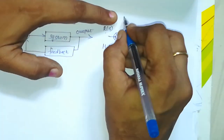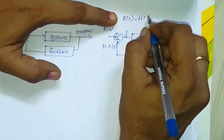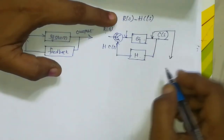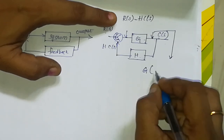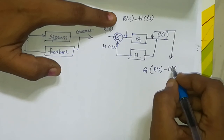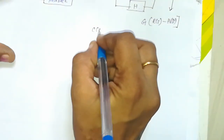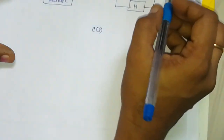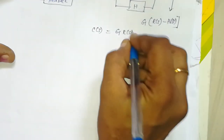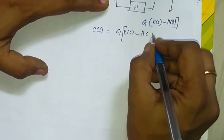At the summing point we will produce R of S minus H into C of S. So the overall gain: output C of S equals G into R of S minus H into C of S.